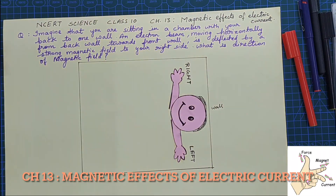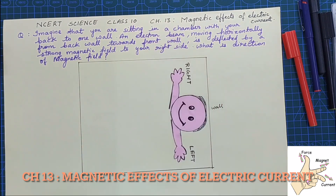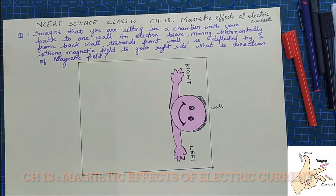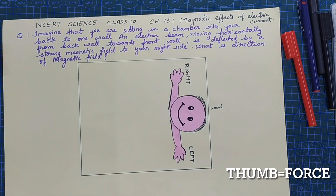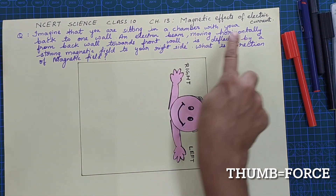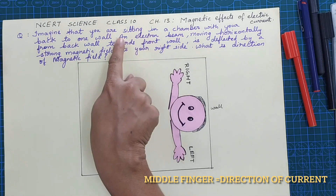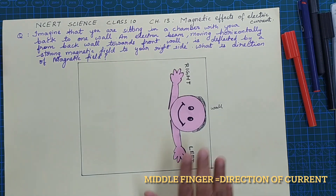This question belongs to NCERT Science Class 10, Chapter 13: Magnetic Effects of Electric Current. The statement has been rewritten so that the key points can be discussed clearly.